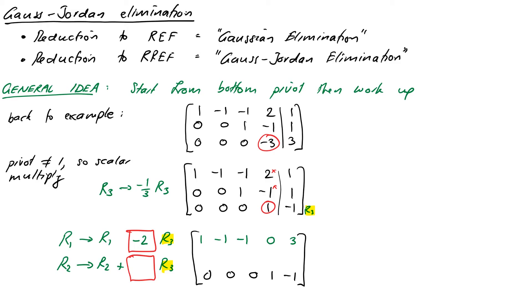And for row 2, we have a -1 where we want a 0. So we just need to add on one copy of row 3 to that one. So the new row 2 is going to become 0, 0, 1. They don't change. Then you're going to add 1 onto -1 to give us a 0. And then you're going to add the -1 onto 1 to give us a 0 also.